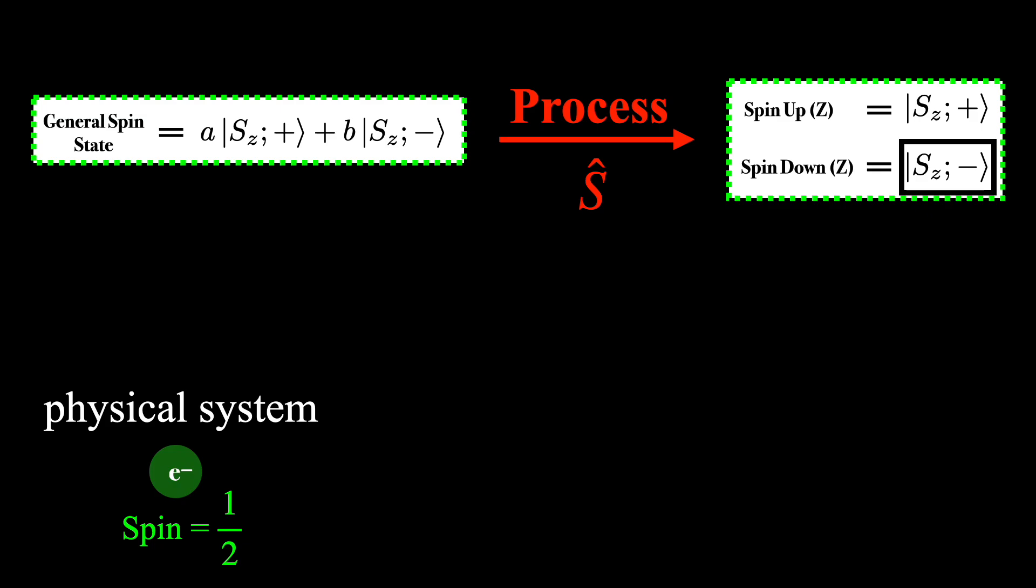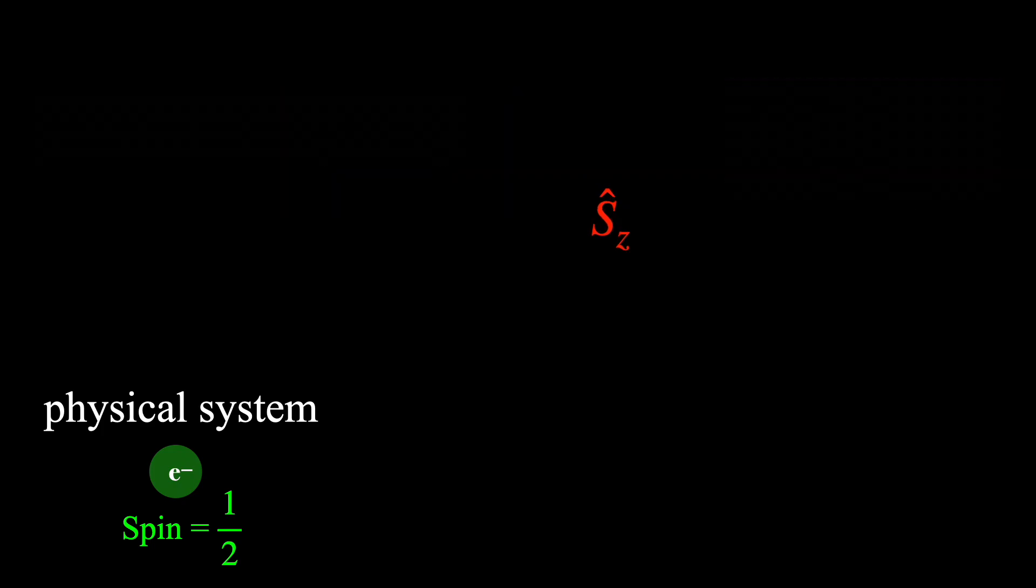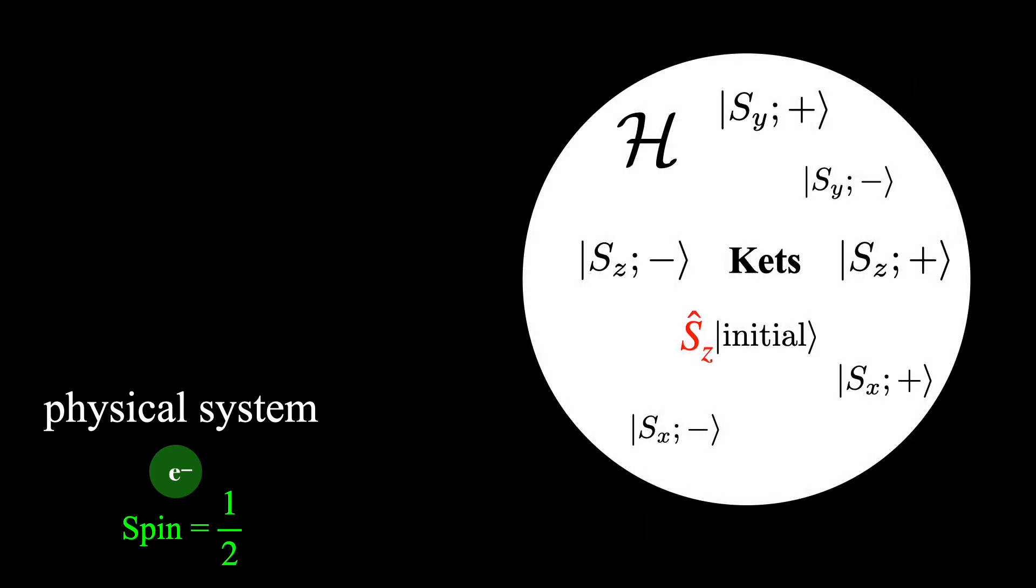To be a bit more precise, this specific process is described by the operator that corresponds to the spin z observable. And in the Hilbert space of all possible states, or kets, of our system, this operator acts on the initial ket and transforms it into one of the final kets.